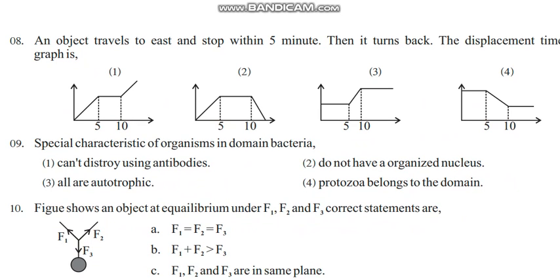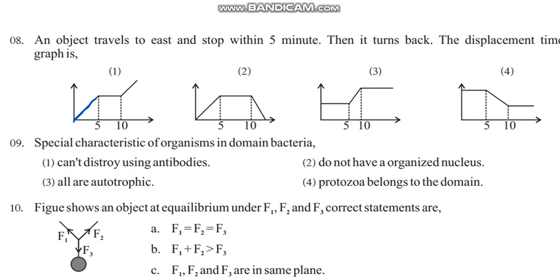An object travels to east and stops within five minutes, then it turns back. The displacement-time graph is: first the distance should increase like this. Third and fourth won't come because they don't stop the motion in the first five minutes. Then five minutes they are resting, so this is the resting part. The line going down means it is turning back, so second one is the most suitable graph for the motion described here.